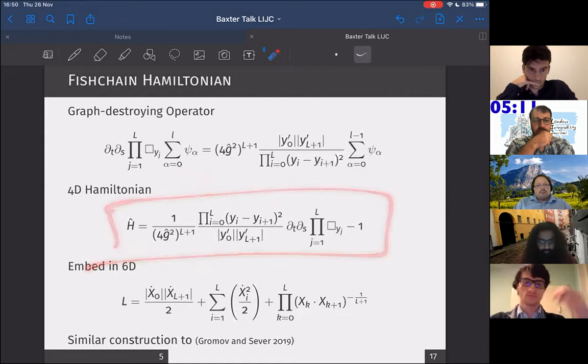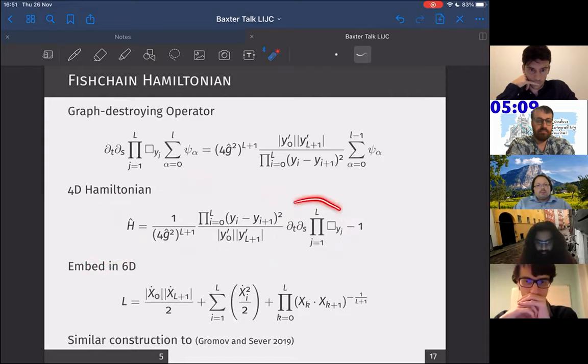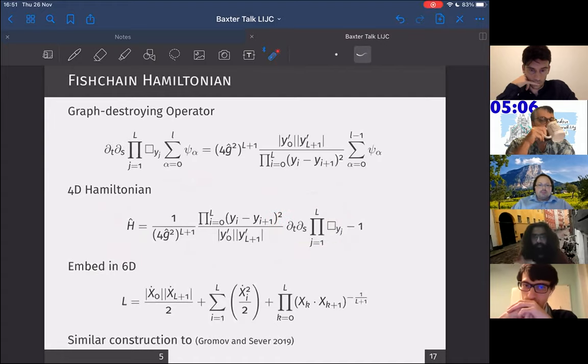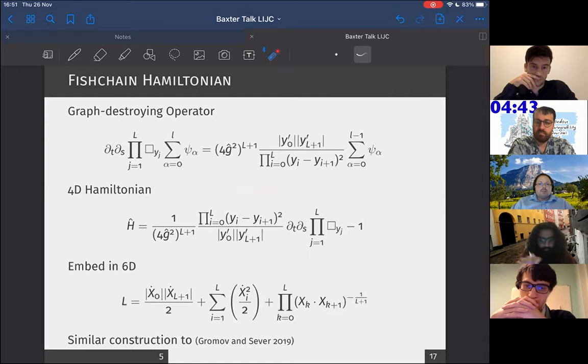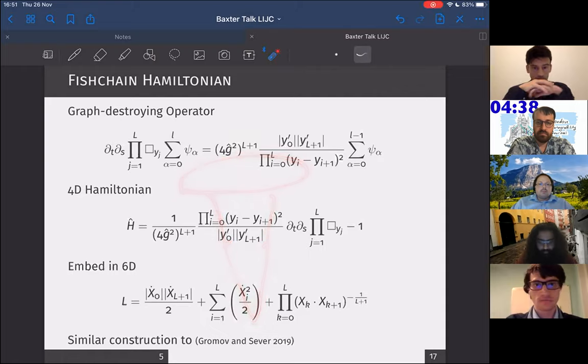At first look, this Hamiltonian in 4D looks really like it's got an, it looks super non-local because we have a product of kinetic terms, but it's not that bad because what we can do is embed it in 6D. If we embed it in 6D, basically, if I have a cusp Wilson line with L insertions of Z, this corresponds to a fish chain with L particles in the bulk and two boundary particles.